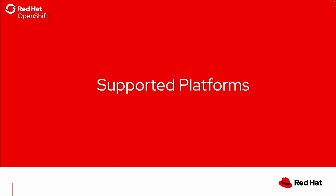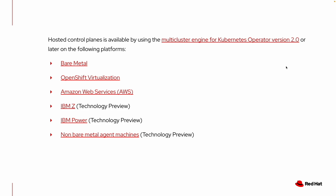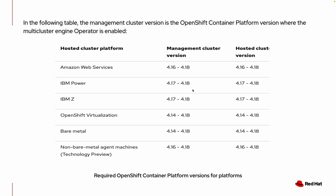Let's review the supported platforms for HCP. Currently, HCP installation is supported on platforms like Bare Metal, OpenShift Virtualization, and AWS, while the remaining three are still in technology preview stage. These are the required OCP versions for each platform. For example, if your management cluster is running on AWS and you want to create a HyperShift cluster, the version of the hosted control plane cluster depends on the management cluster. More information is available in the official documentation.